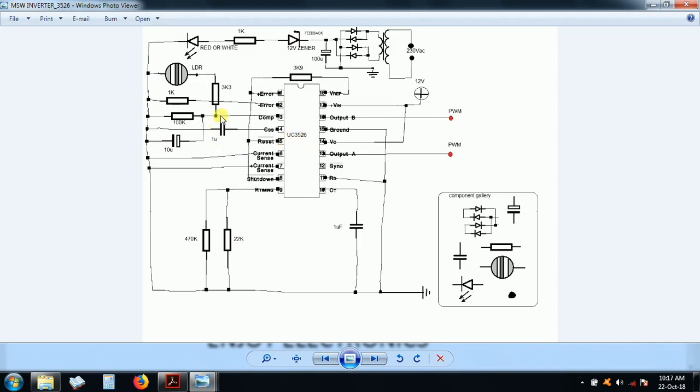So, here what I have done is, on the compensation pin, I have actually used an LDR as a variable resistor for the feedback. The feedback is from a transformer, a 12V or 15V secondary, a small transformer. Please note, this is not the main transformer. This is the feedback transformer.